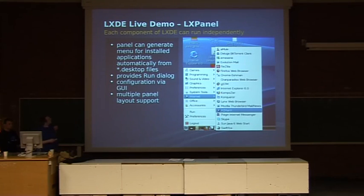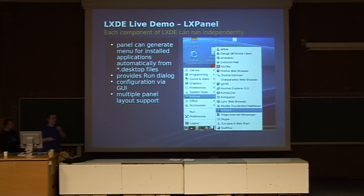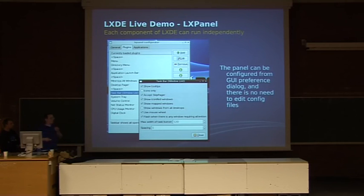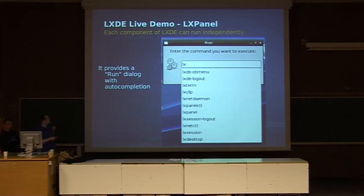We have the panel with a lot of plugins. The menu is, as I said, according to FreeDesktop specs — it's generated on the fly, and we also have a manual caching mechanism to make loading the menu even faster. Here you see some of the plugins that can be added to the panel. There are really a lot of plugins, and we are working on even more plugins by separating the panel into two separate packages — plugins, and also the panel itself.